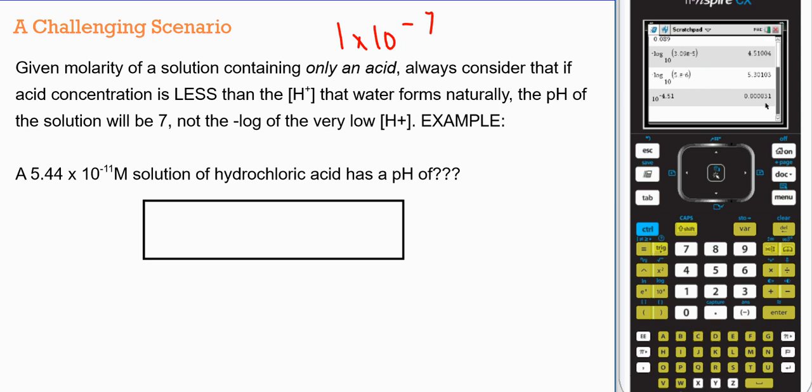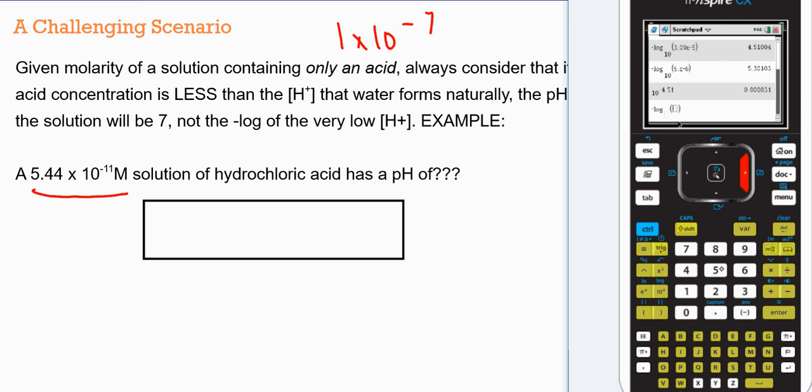If we did that in a calculator, we would do negative log, I'm going to tab into my main field, 5.44 double E negative 11, we're going to get that our system has a pH of 10.26. Now you have to put the logic test to this. You just put an acid into water.